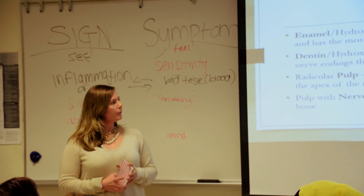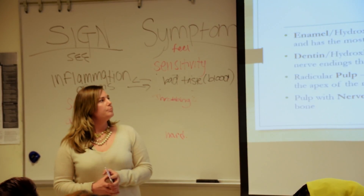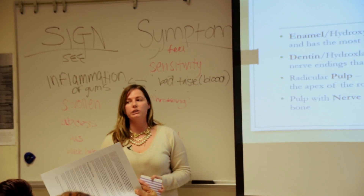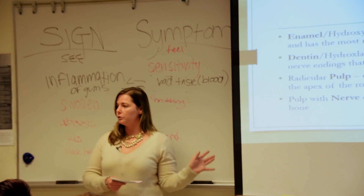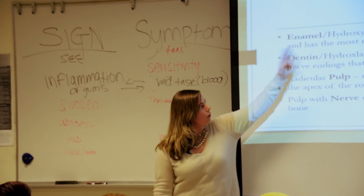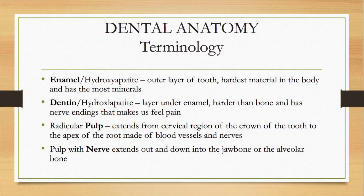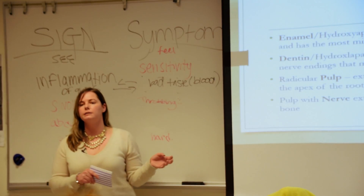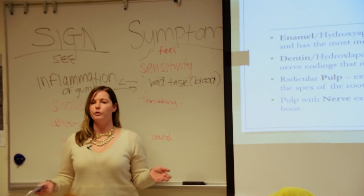Dental decay is a preventable disease, but it first starts affecting the enamel. In chemistry, enamel is called hydroxyapatite. Dentin is also hydroxylapatite. Enamel is the hardest structure in the body. Dentin is softer but harder than bone, and it has nerve endings. Sometimes when the decay is in the dentin, people will feel pain, but not always.